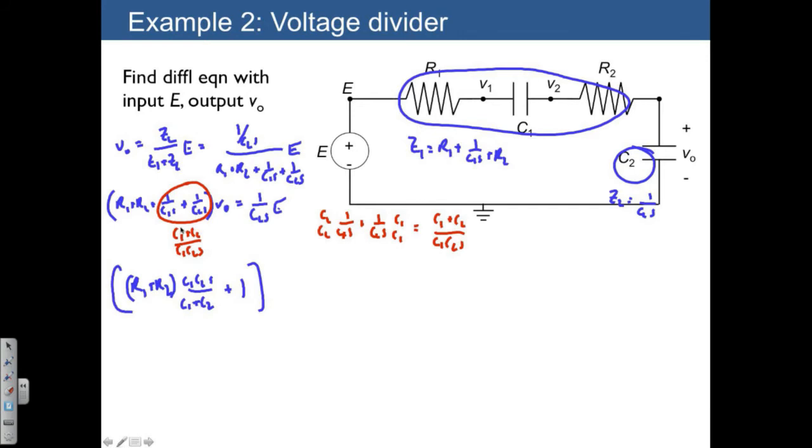That gets multiplied by VO, and then I have C1C2S over C1 plus C2 times 1 over C2S multiplied by E.